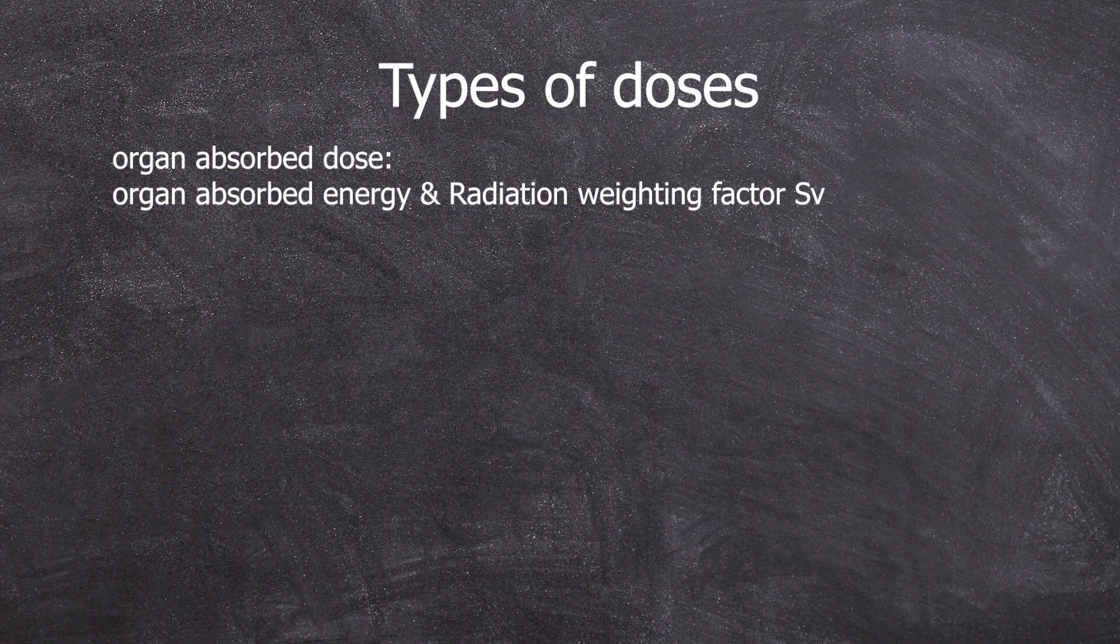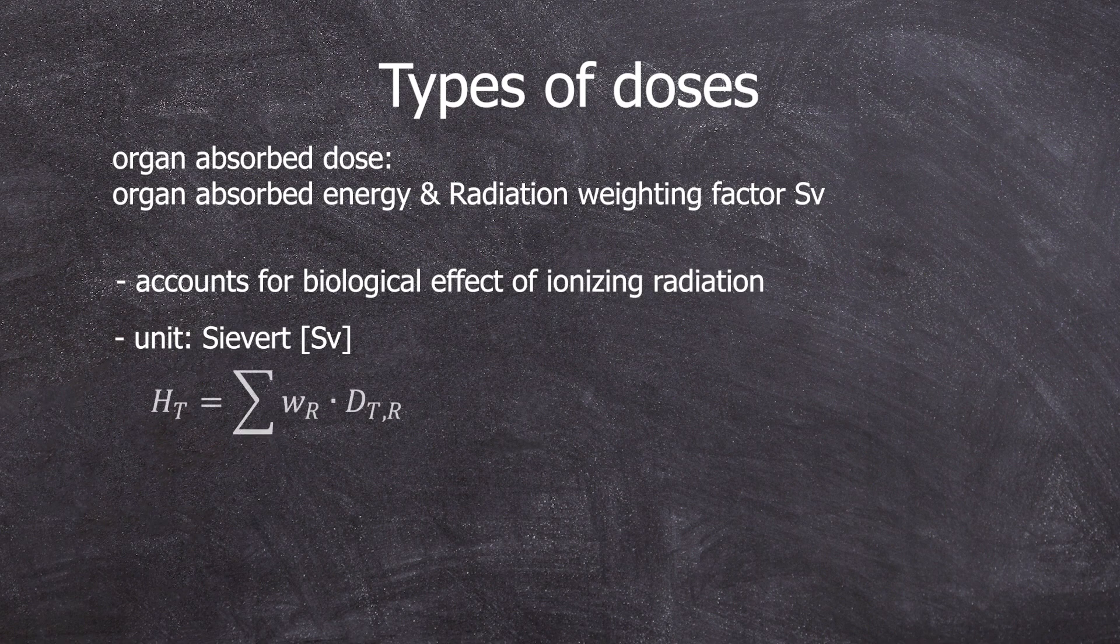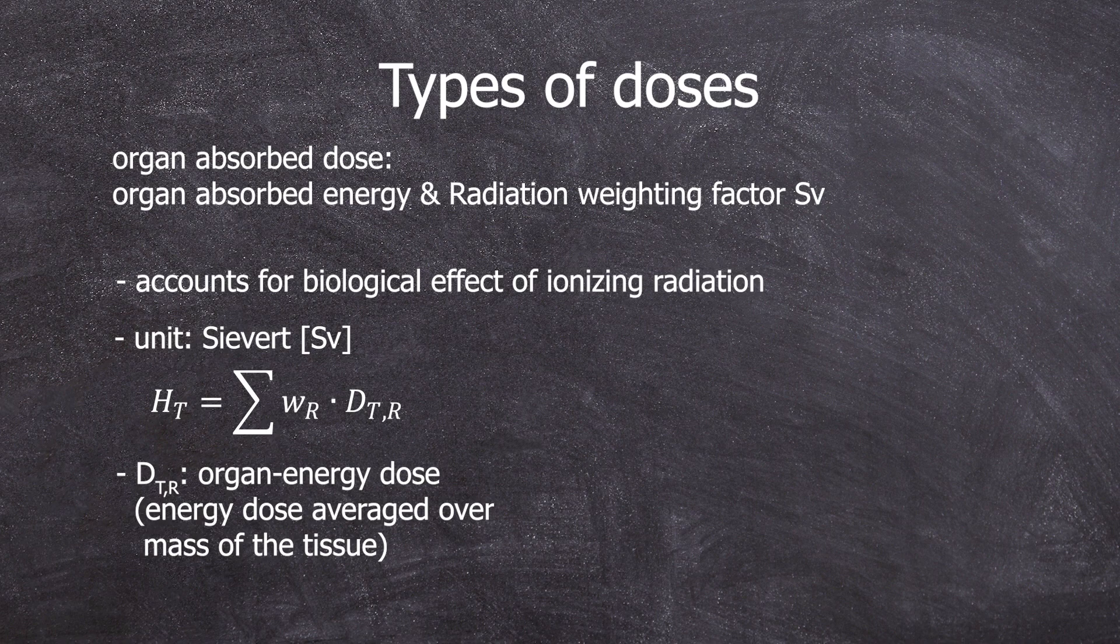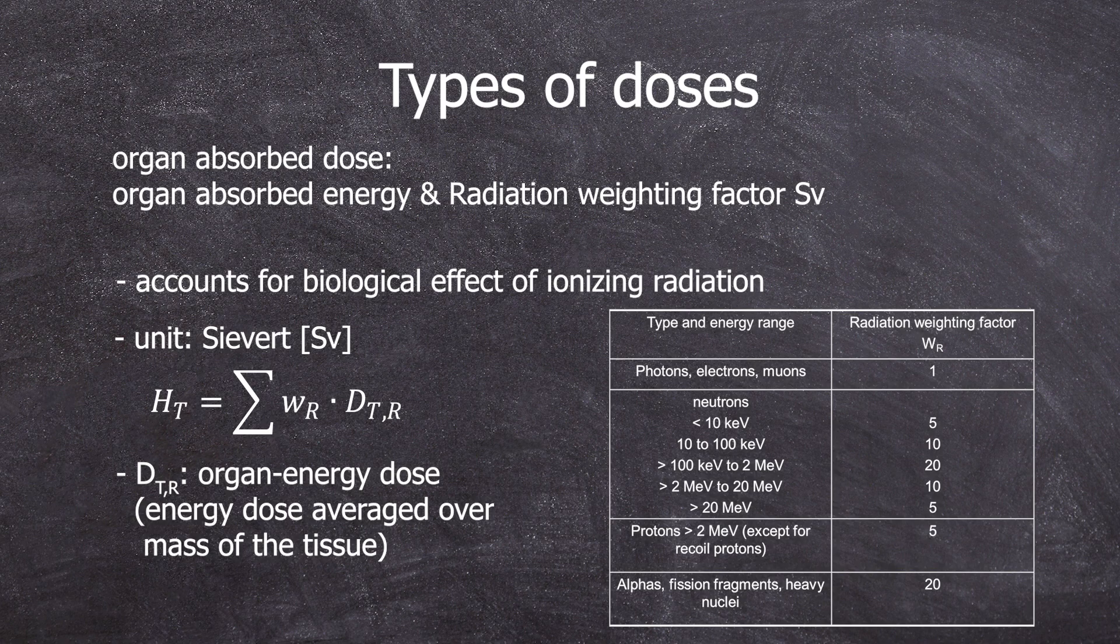The organ equivalent dose is the first unit that takes into account the biological effects of ionizing radiation. The unit is sievert, which is calculated as shown here, with D being the organ energy dose and W being a literature value that can be found in a table like this. Now we know how much one organ received, but humans are more than one organ.